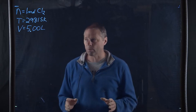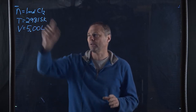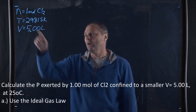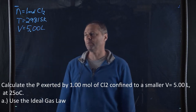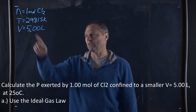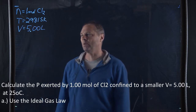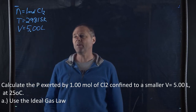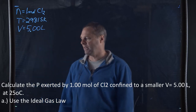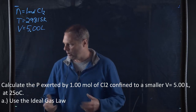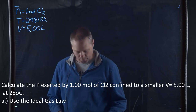In this case, what we're going to do is look at one mole of chlorine gas whose temperature is going to be room temperature, 25 degrees Celsius or 298.15 Kelvin, and has a volume of 5 liters. And we want to determine the pressure.